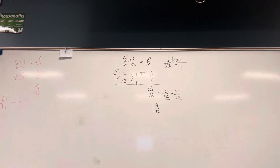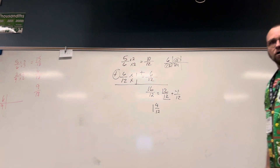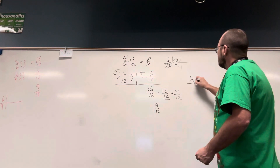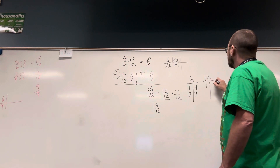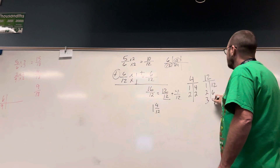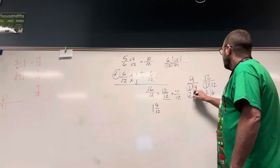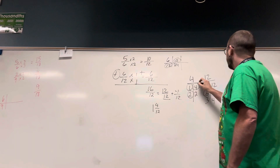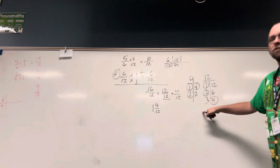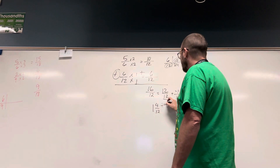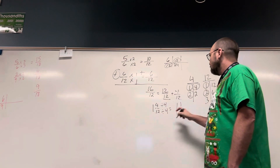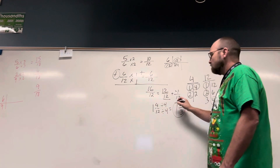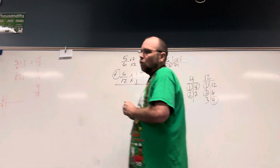This can be simplified. The factors of 4 are 1, 4, and 2. The factors of 12 are 1 and 12, 2 and 6, and 3 and 4. They have 1, 2, and 4 in common. Since 4 is the biggest, I divide both numerator and denominator by 4: 4 divided by 4 is 1, and 12 divided by 4 is 3. So my final answer is 1 and 1 third.